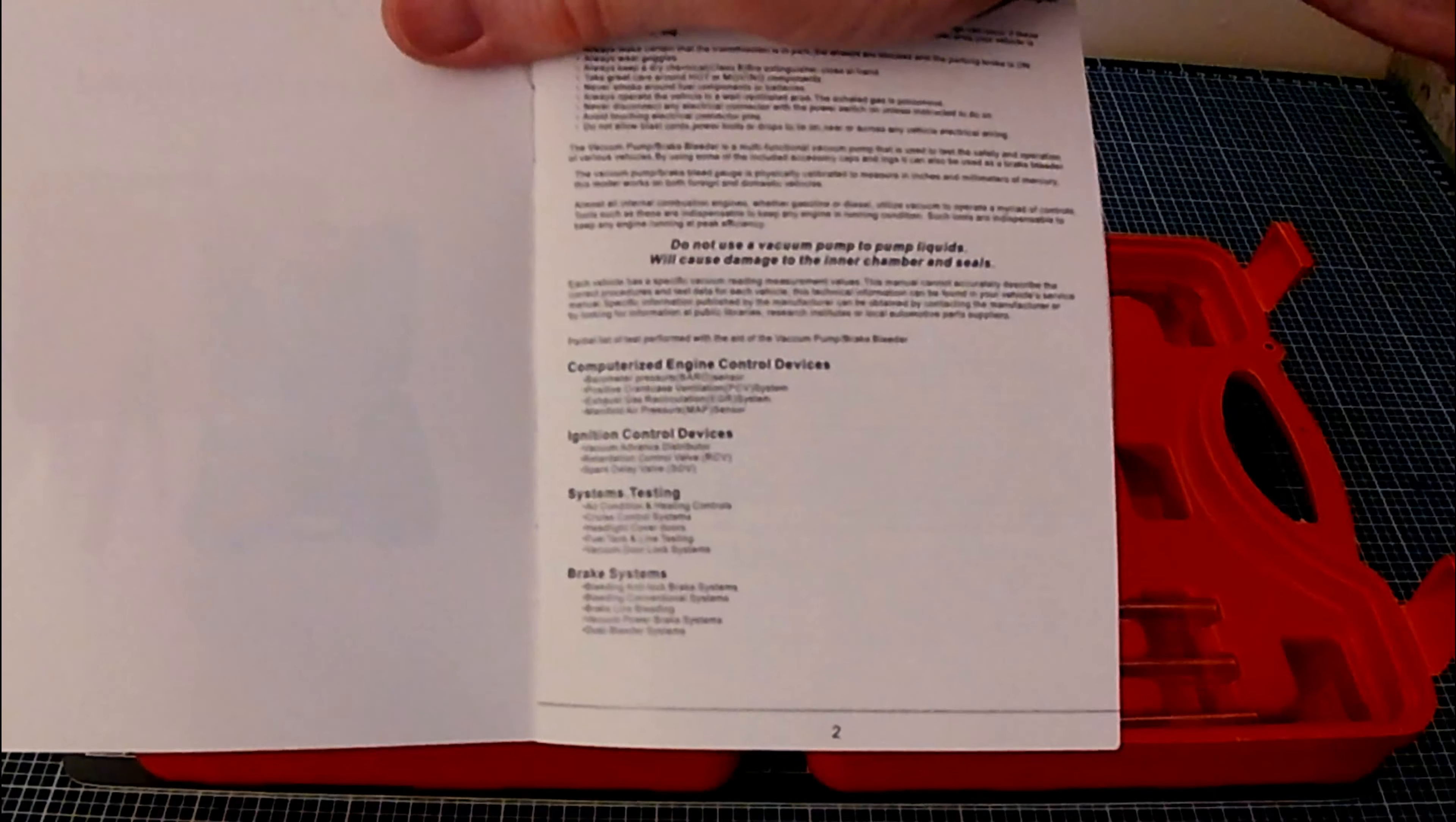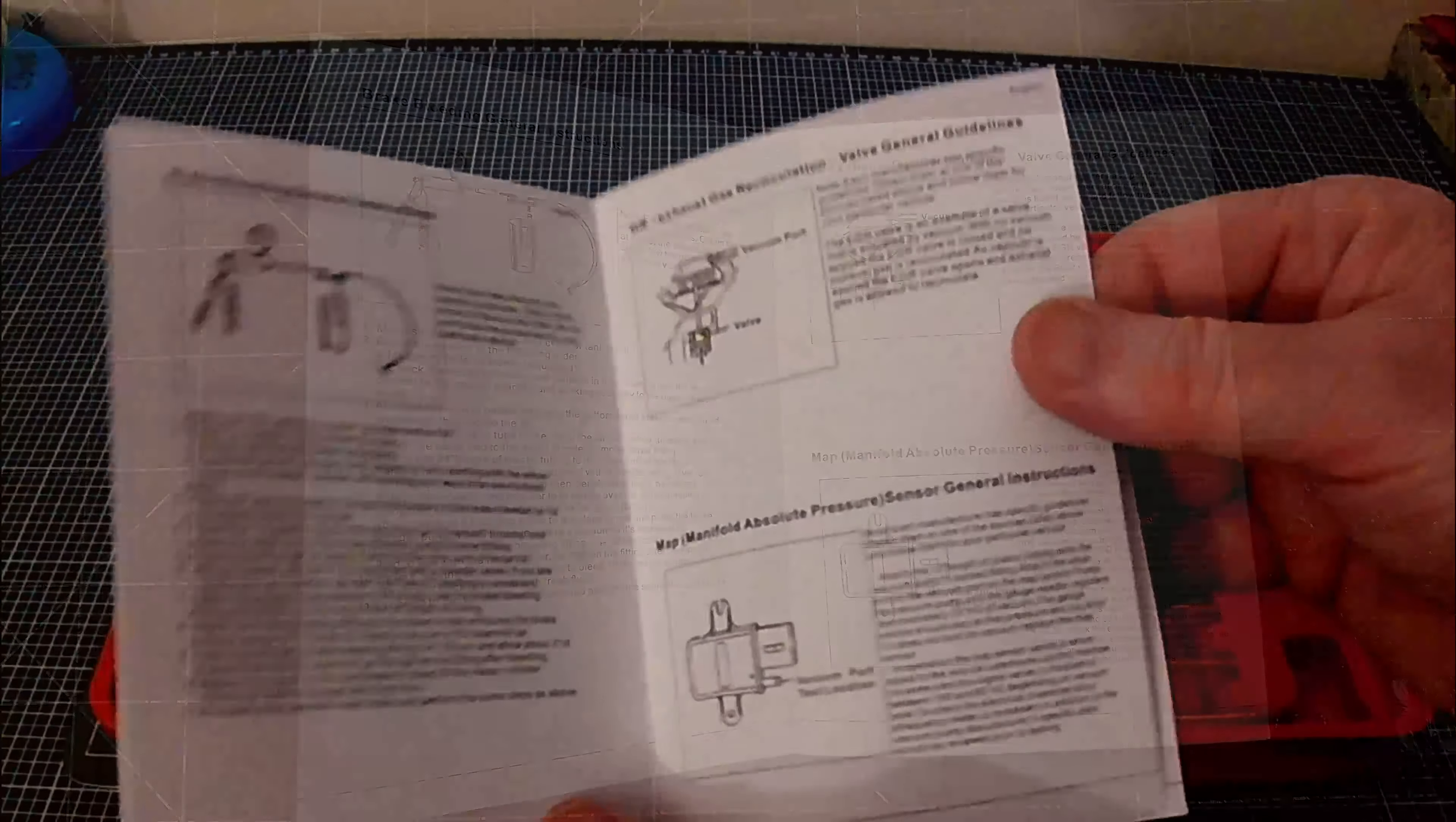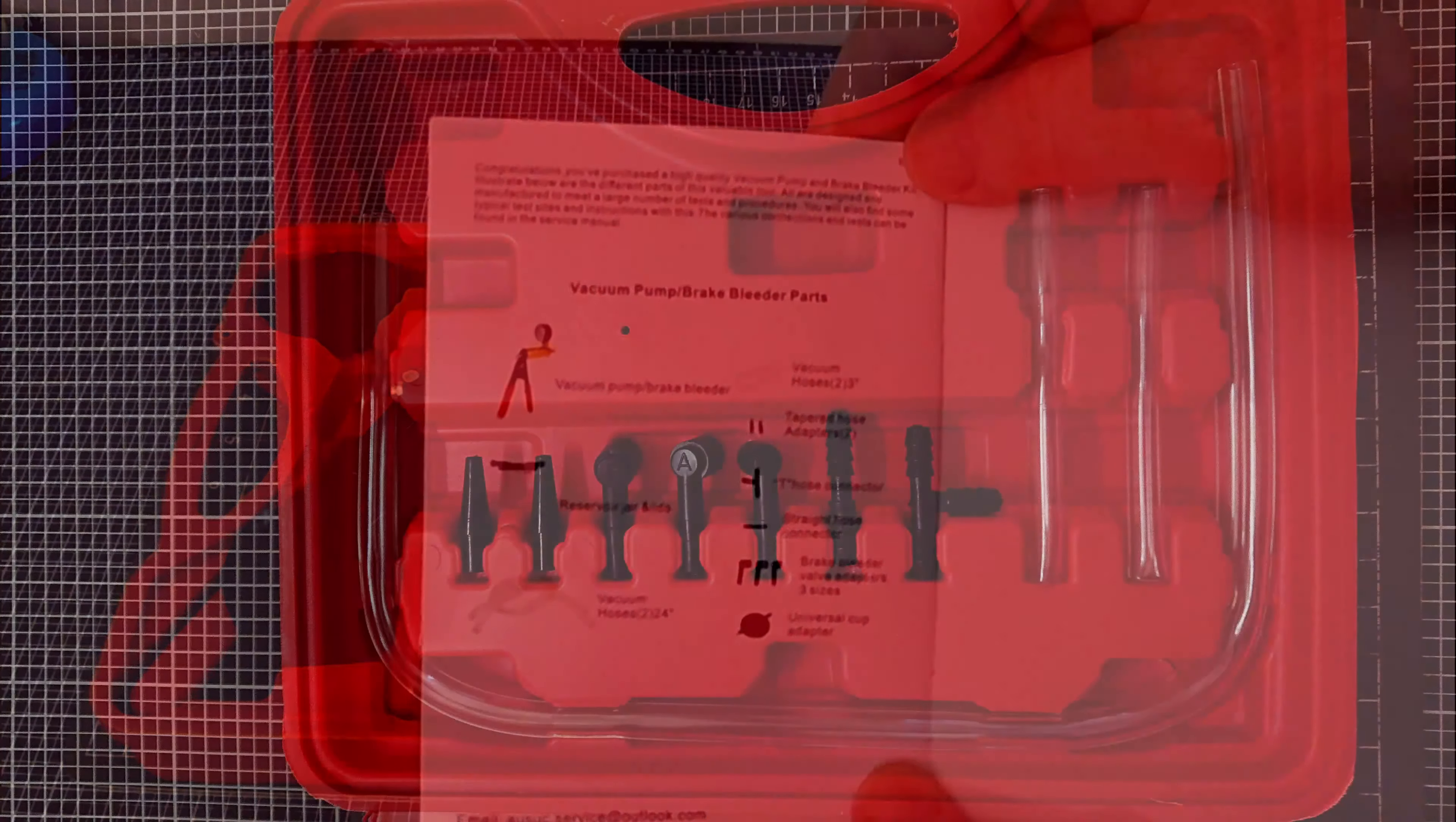It's not just for brake systems or hydraulic systems; you could use it for other things. There's brief but concise instructions for brake bleeding, for checking your MAP sensor and your exhaust gas recirculation valve. The manual comes in English, Italian, Spanish, German, French, and on the back is a list of items in the box in English.